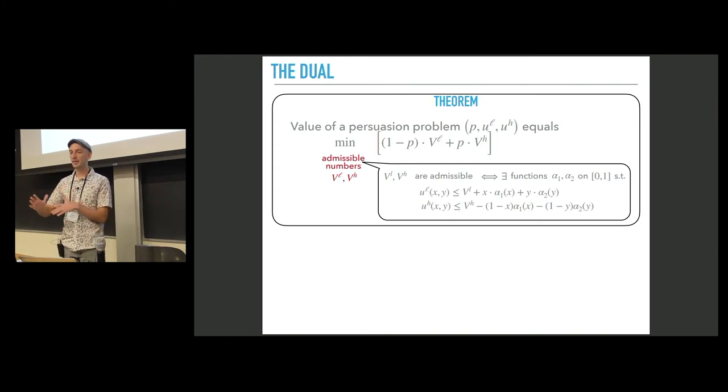These two numbers are admissible if we can find two functions, alpha 1 and alpha 2 on 0,1, such that the utility function in the low state is bounded above by VL plus some expression, and the utility function in the high state is bounded by VH minus some expression. It doesn't really matter what these expressions are.